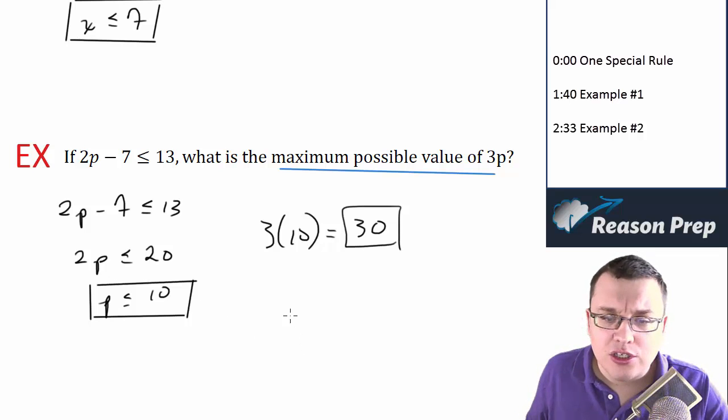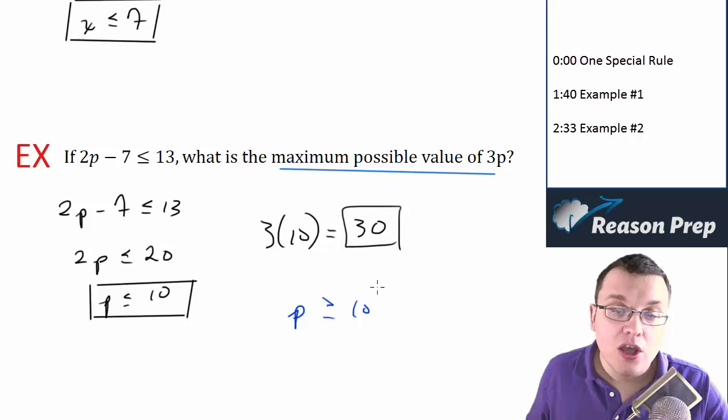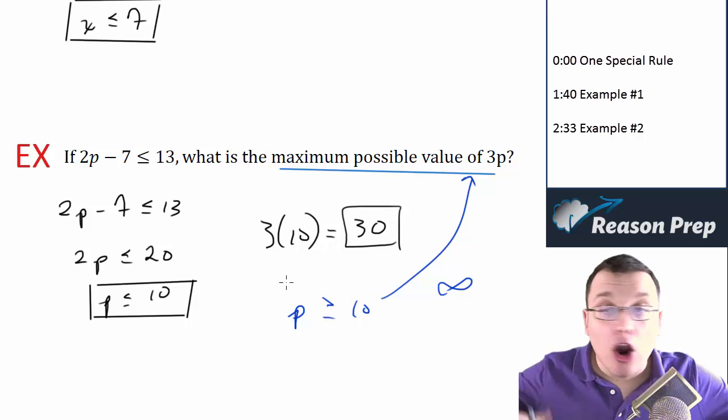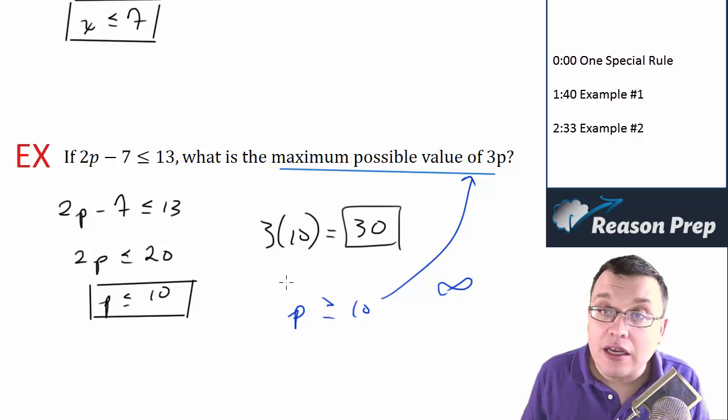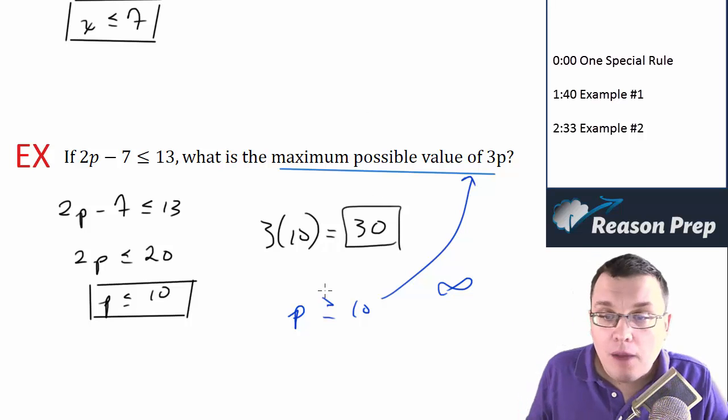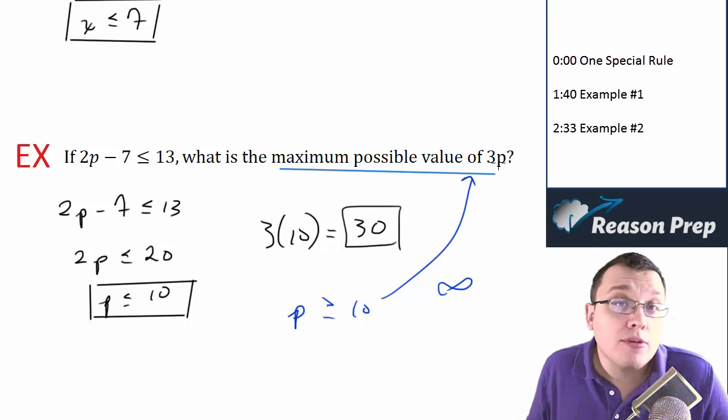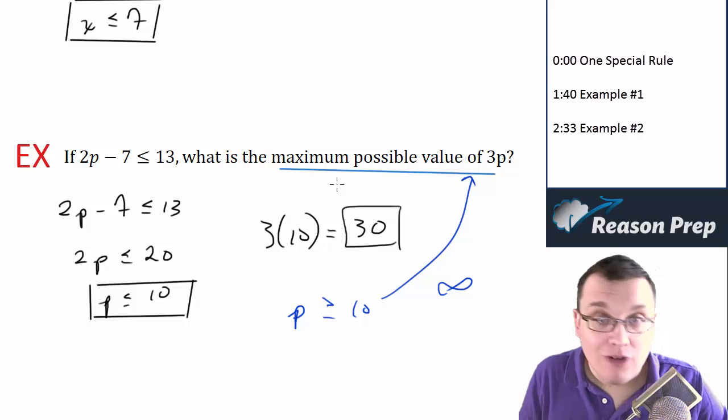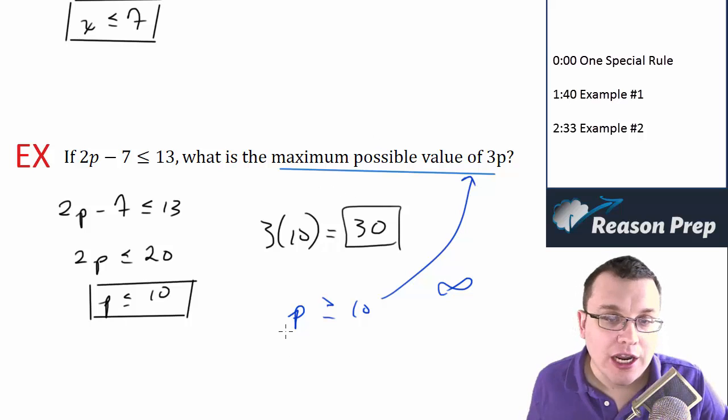And notice if you had, for example, this situation, let's say you messed up this problem, and you got p is greater than or equal to 10, notice this would have no solution. I mean, it would be basically infinity, because p could be arbitrarily large, p could be a million, it could be a trillion, it could be one with a trillion zeros. So this could just be arbitrarily big, so if you get something absurd, often that's a sign that you made some sort of algebraic error somewhere. So go back and check your work again.